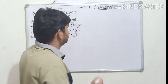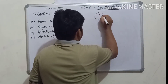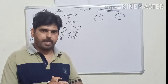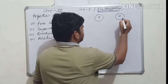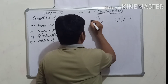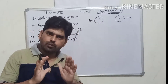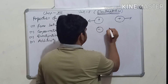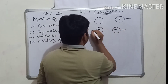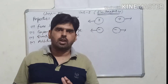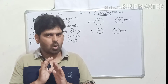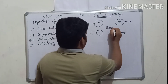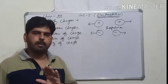Practically it is observed: when two positive charges are there, they repel each other. When two negative charges are there, they also repel each other. When similar charges are there, they always repel each other. There is a force of repulsion between like charges.